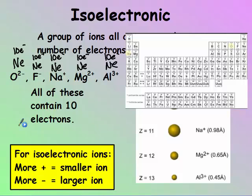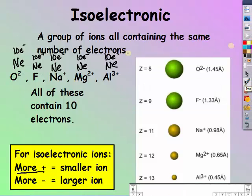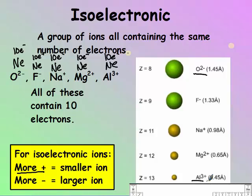So for isoelectronic ions, the more positive it is, the smaller it is. The more negative, the larger it is. We can see that in the picture. Our negative two is the largest. Aluminum plus three is the smallest. If they contain the same number of electrons, the easiest way is to figure out what element it has the same number of electrons as. If they have the same number of electrons, the more negative it is, the bigger, positive, the smaller.